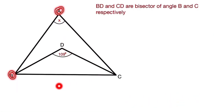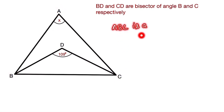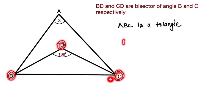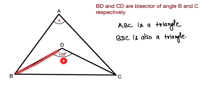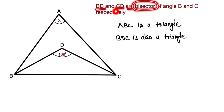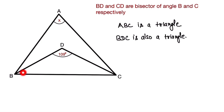So this is our question. This is the vertex of triangle ABC, and ABC is a triangle. BDC is also a triangle. One angle is given — angle D. We have to find the value of x. Here, BD and DC are the bisectors of angle B and angle C respectively.